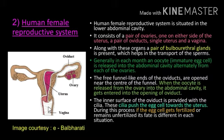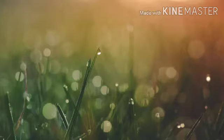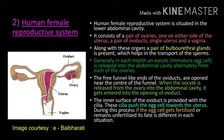Along with these organs, a pair of bulbourethral glands are also present, and the secretion of these glands helps in transport. Generally, in each month an oocyte — that is, an immature egg cell — is released from the ovary into the abdominal cavity.